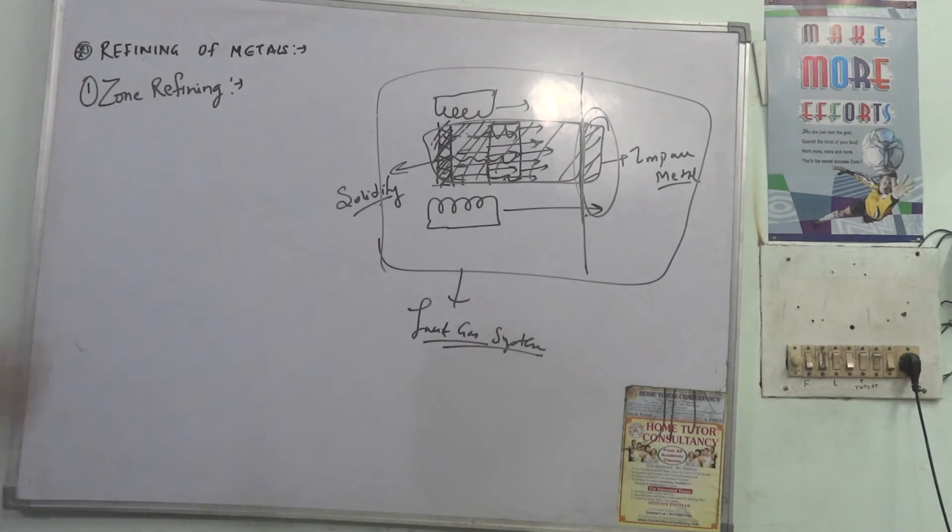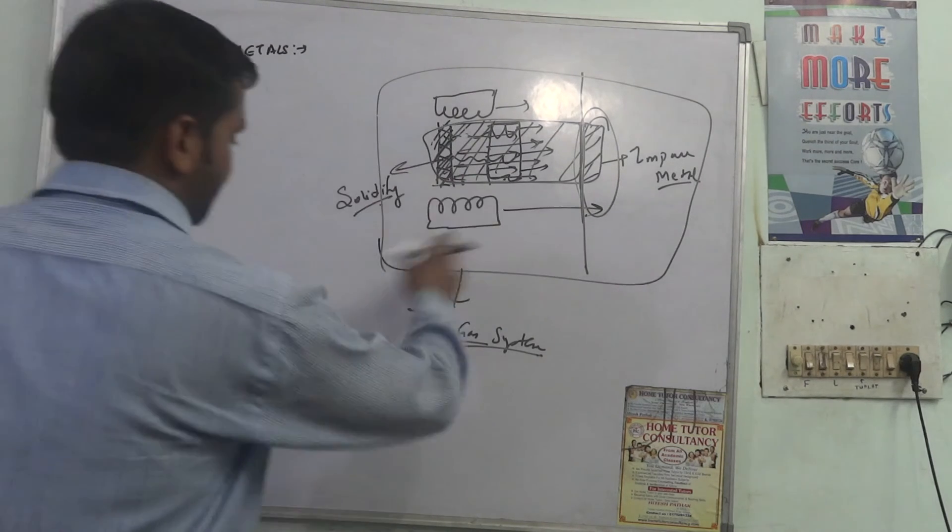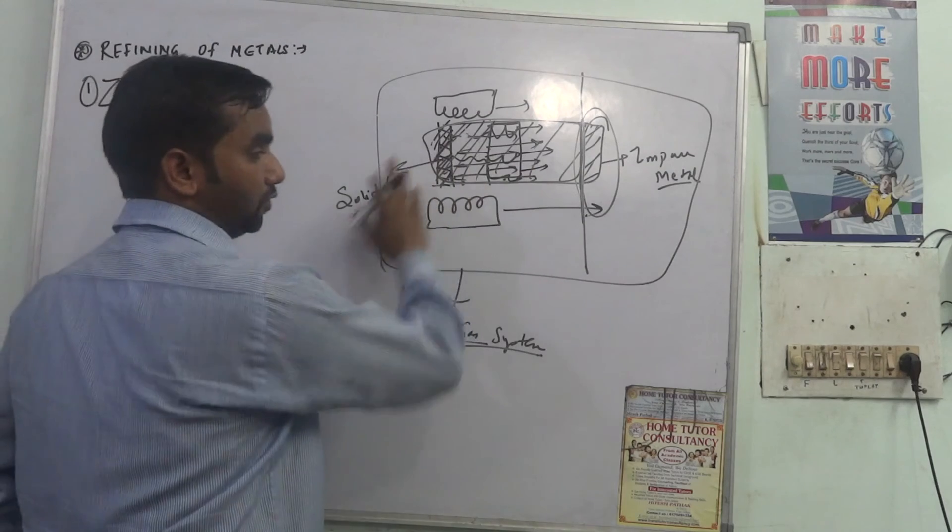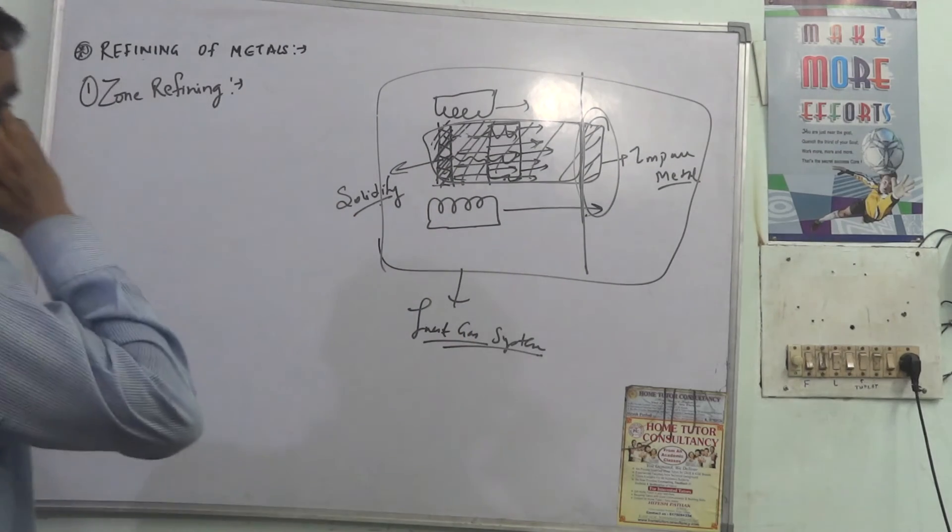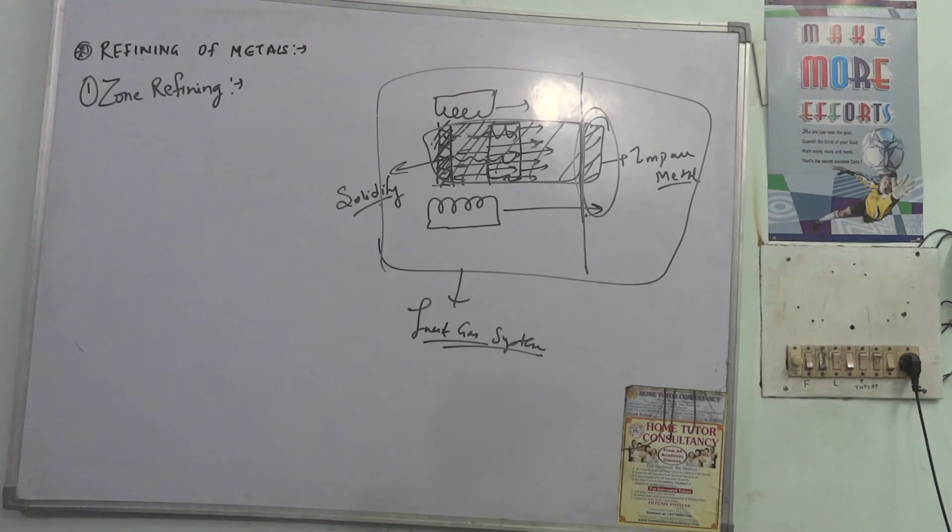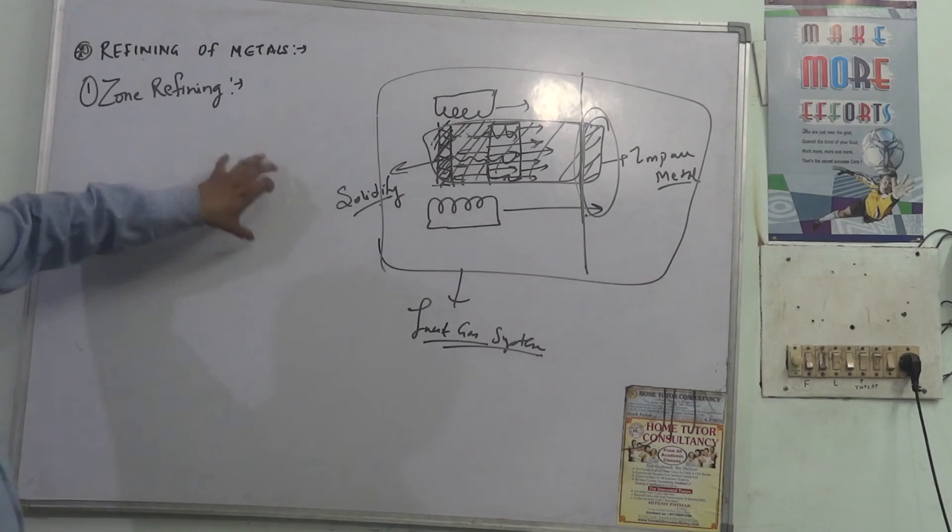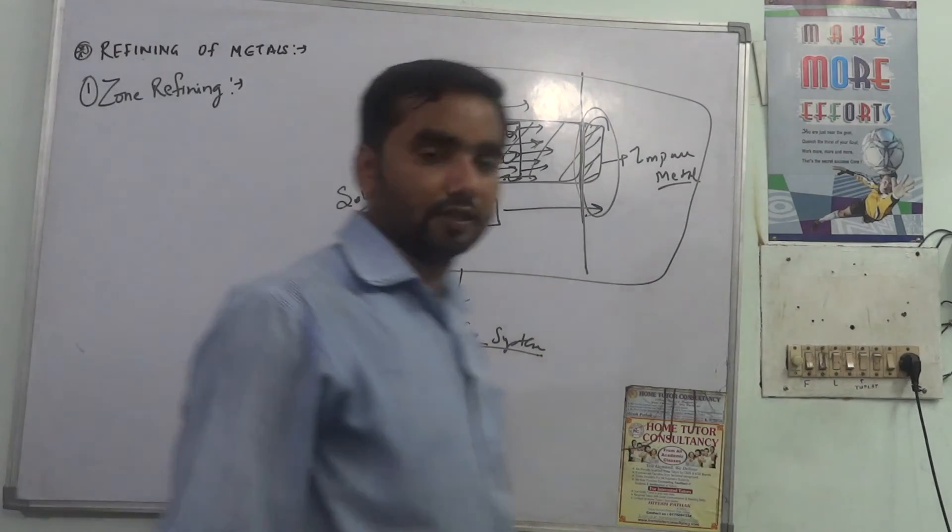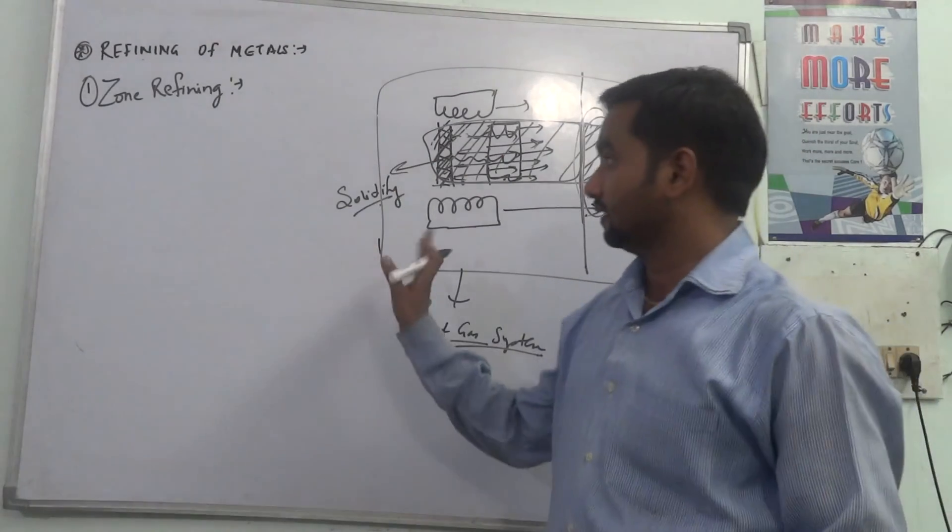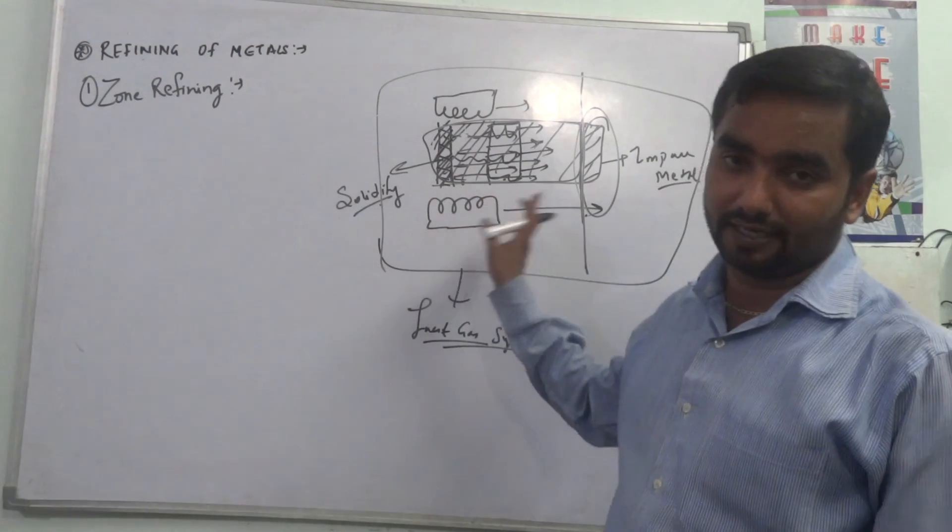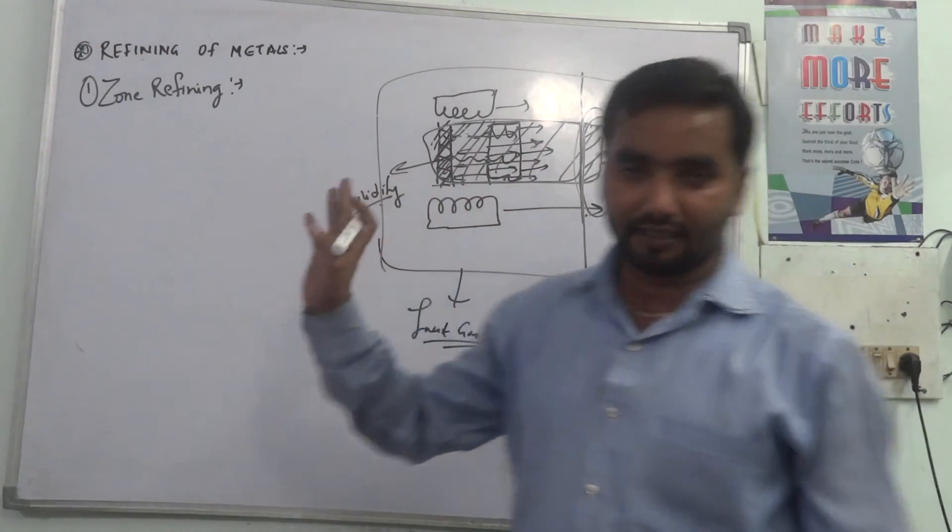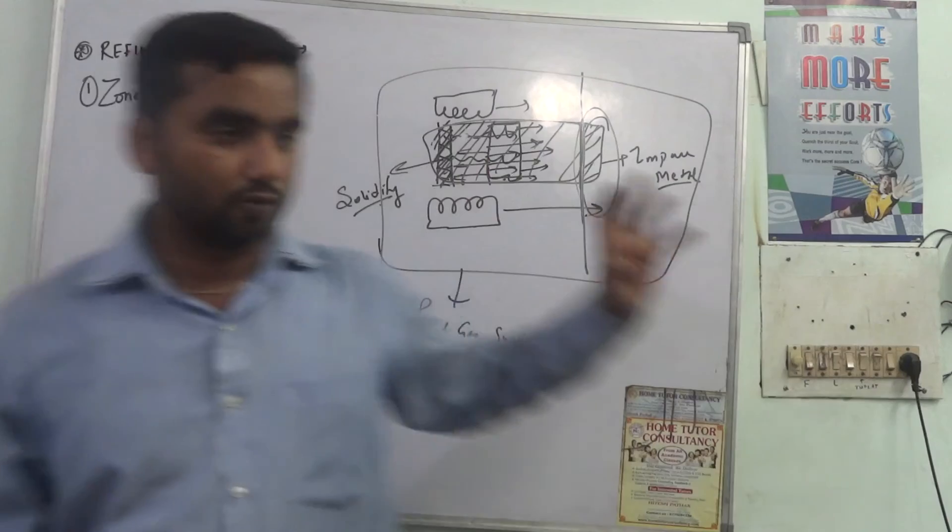This is how we will do zone refining, and further we repeat this till we get the pure metal for our use. This is used mostly for those metals which require high purity for their process or operation. This is all about zone refining.